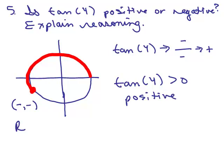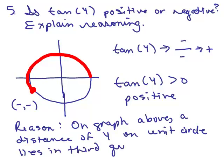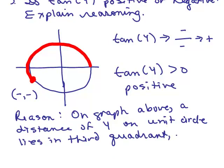So you could write this out, reason, on graph above a distance of 4 on the unit circle lies in the third quadrant or quadrant 3 where the tangent is positive.